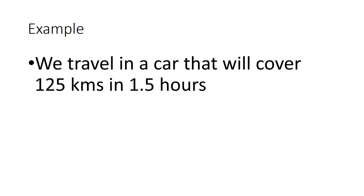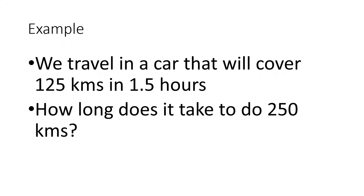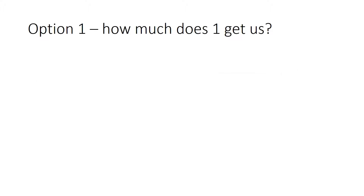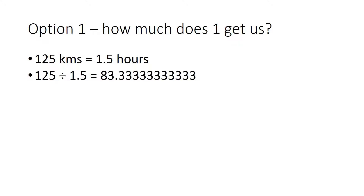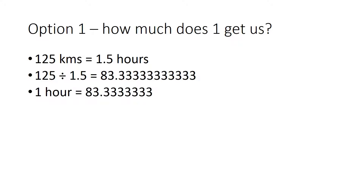Let's say we've got a car that's going to cover 125 kilometres in one and a half hours. That's how fast it goes. And how long does it take to get to 250 kilometres? The first option is you could work out what one hour gives us — get down to a unit value and then multiply up. So, one hour gets us 83.3 recurring kilometres, and then we divide 250 by that number, which gives us three hours.